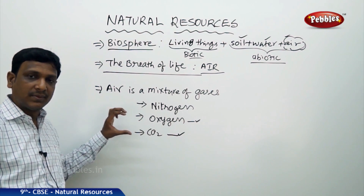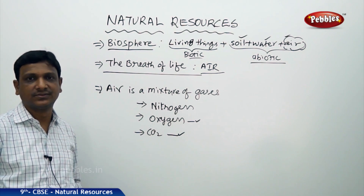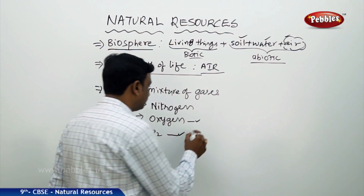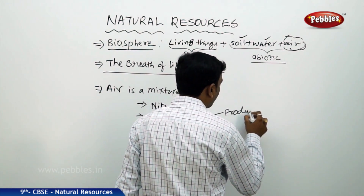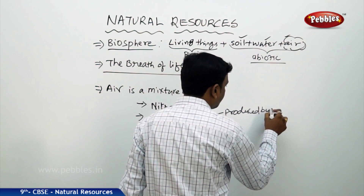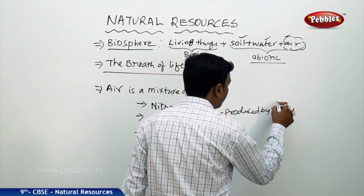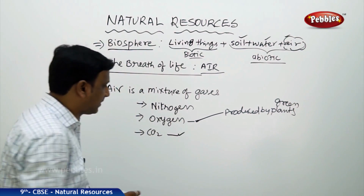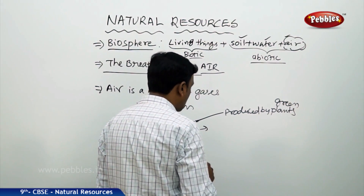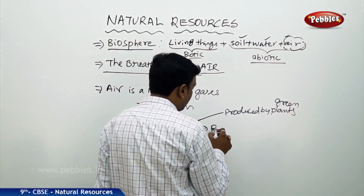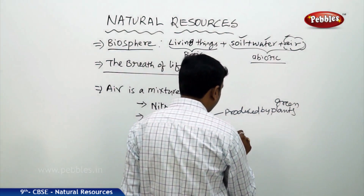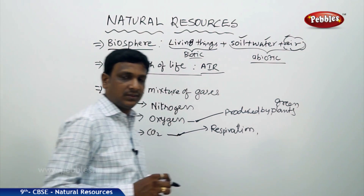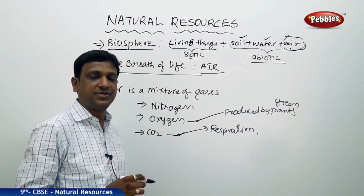The percentage of carbon dioxide in our atmosphere is less — it's a fraction. Now, how is carbon dioxide produced? Oxygen is produced by green plants through photosynthesis. Carbon dioxide is produced by respiration — all aerobic organisms respire and produce carbon dioxide.